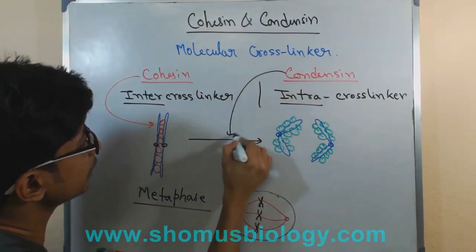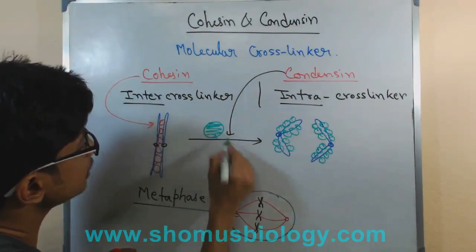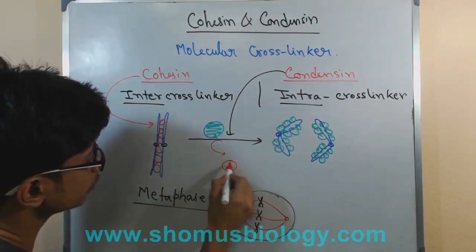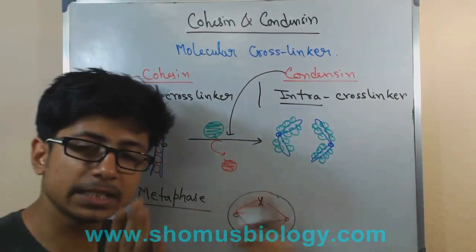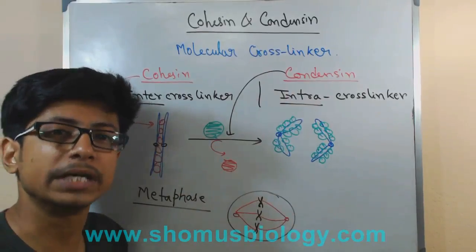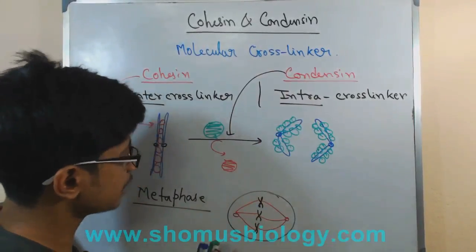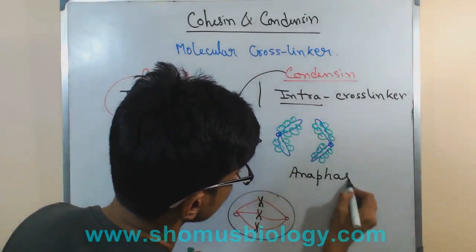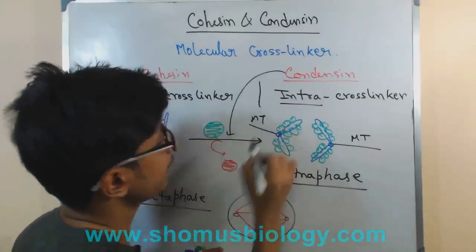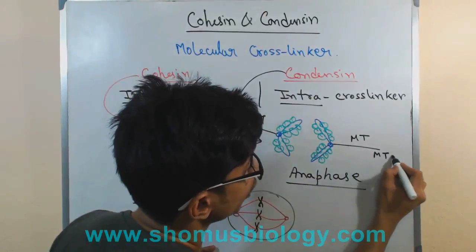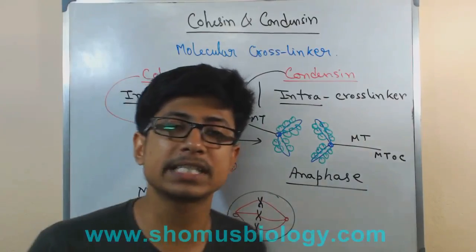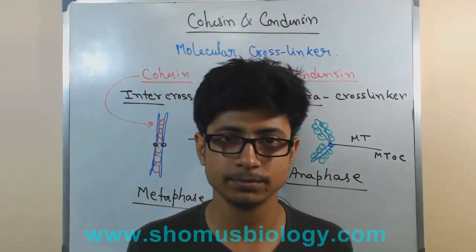After that, the role of condensin comes in. Condensin will replace the cohesin — all the cohesins present between sister chromatids are replaced by condensin, which surrounds all those sister chromatids properly. Then, during anaphase, they will segregate those sister chromatids with the help of microtubules attached to the opposite pole from the microtubule organizing center. The roles of cohesin and condensin in chromatid segregation are hugely important.